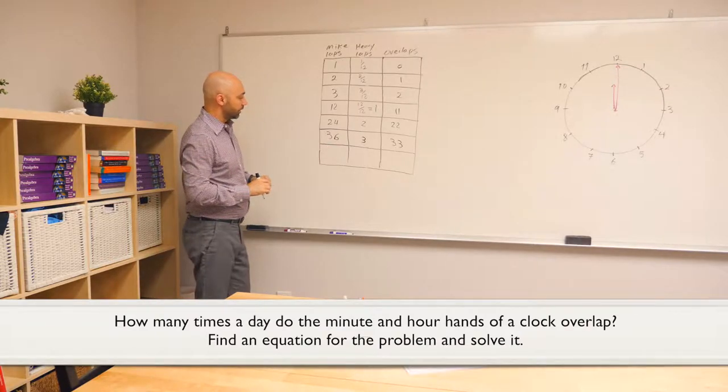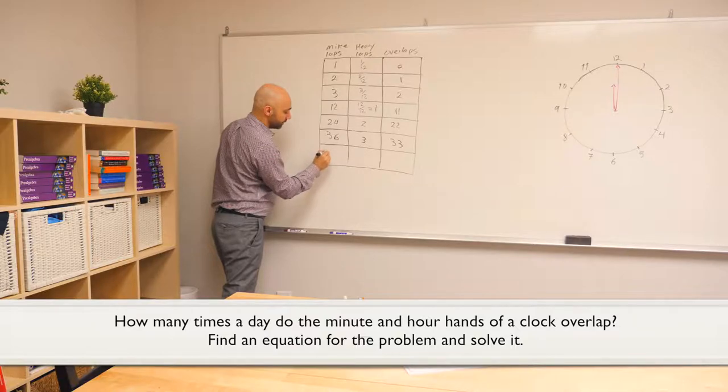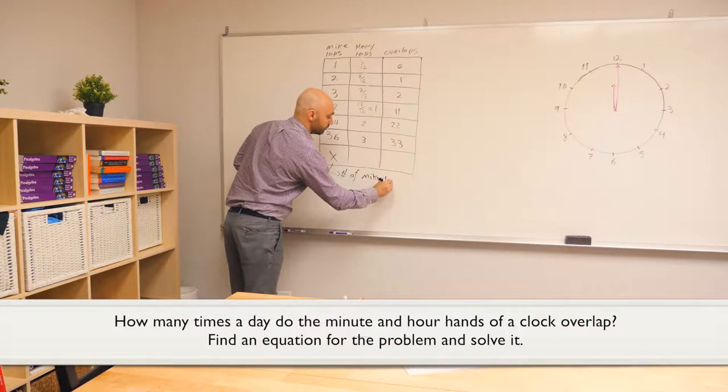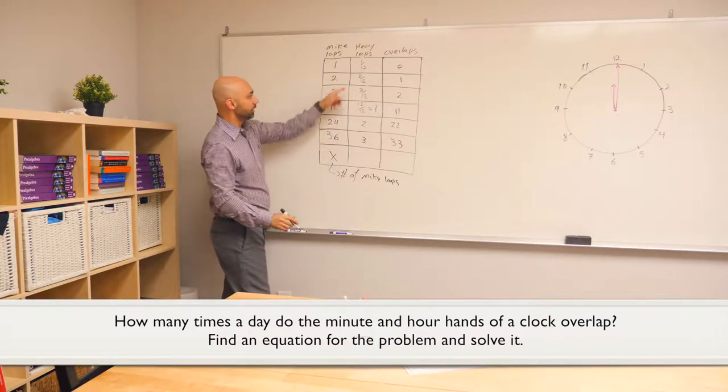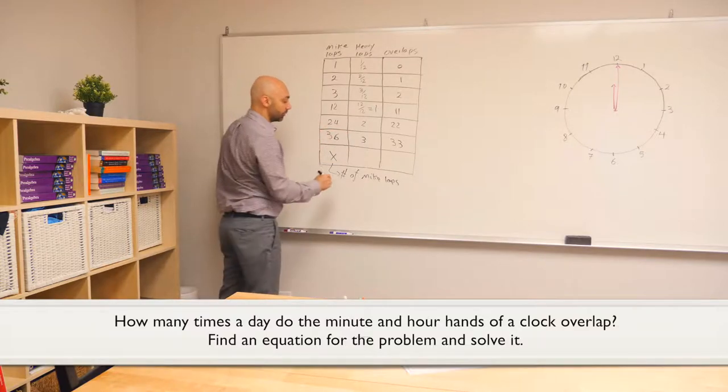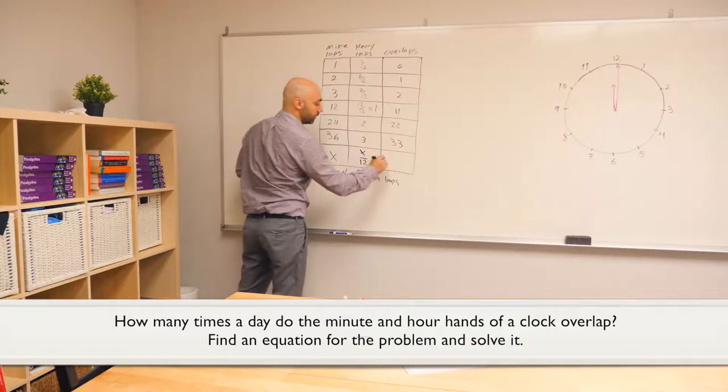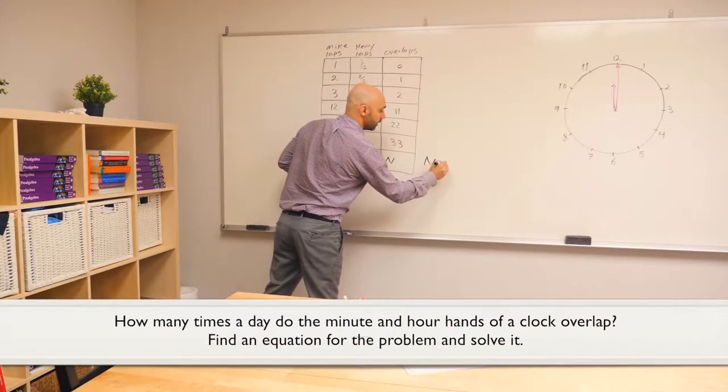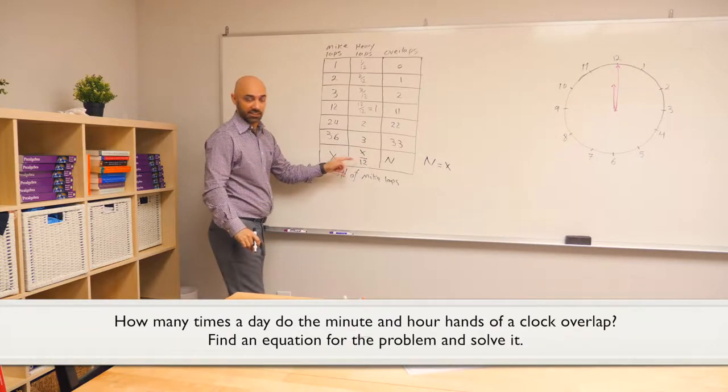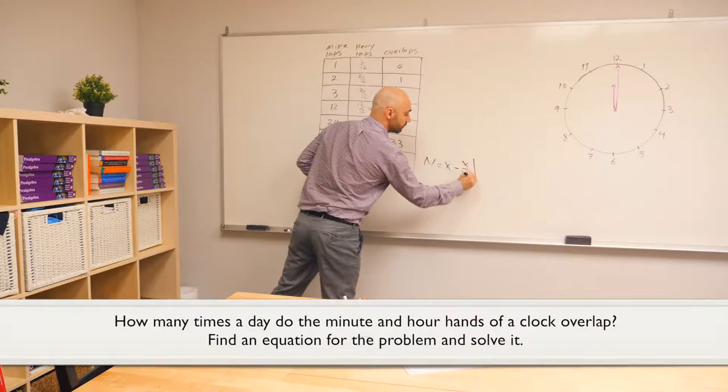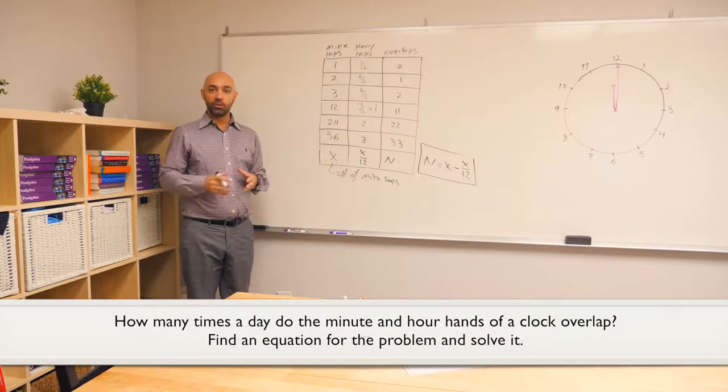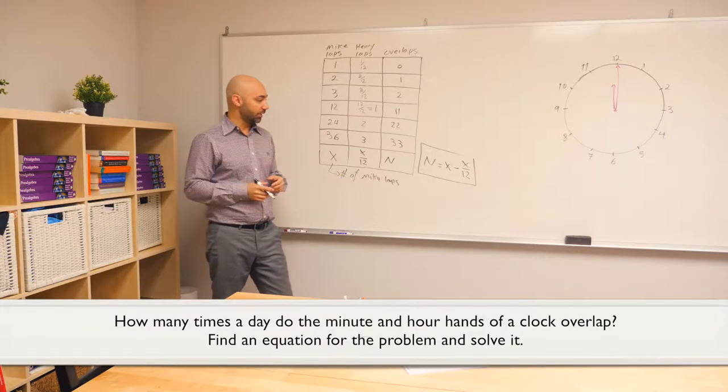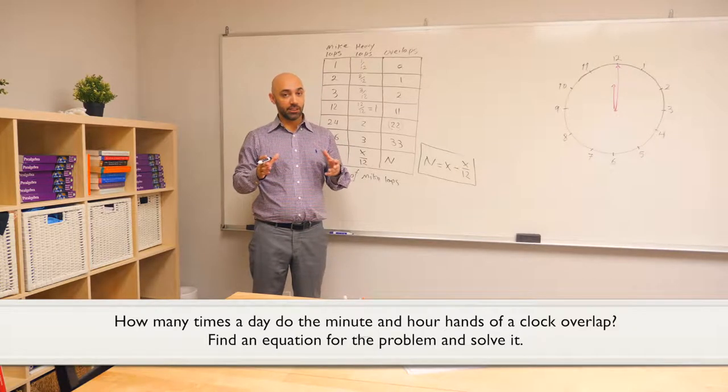And now, you could see a pattern happening here, that if you represent the number of Mike laps as x, I'll write it here. The number of Henry laps would be, as you see along the column, 1/12 of the number of Mike laps. And now, the number of overlaps, if you follow the pattern, would be always the number of Mike laps minus the second column, which is the number of Henry laps. And that's the equation we've been looking for. It gives us the number of overlaps in terms of the number of Mike laps, which is also the number of hours per day, and lets us answer the problem, which was asking for the number of overlaps in one day.